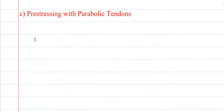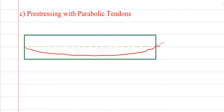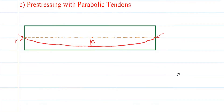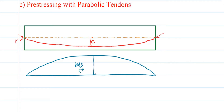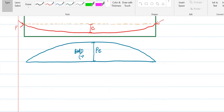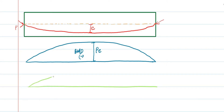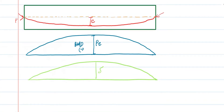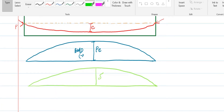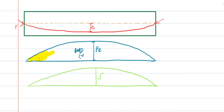The next case is pre-stressing with parabolic tendons. You have a parabolic tendon with eccentricity e at the center and force P. The bending moment diagram equivalent to the parabolic profile is parabolic with a peak value of P·e, taken as negative (hogging). The elastic deflected shape shows an upward deflection delta. To find delta, I need the first moment of area of the M/EI diagram, where the ordinate is P/EI.